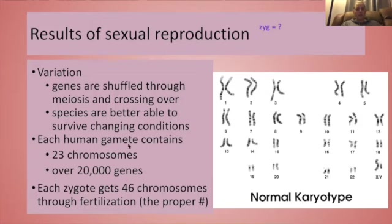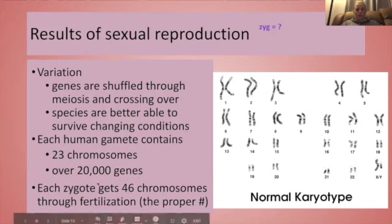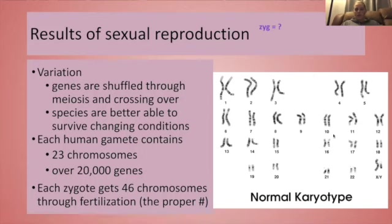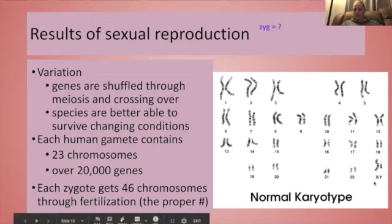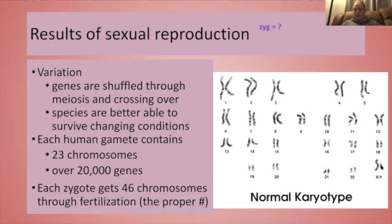Each human gamete contains 23 chromosomes, one set of DNA, and there are over 20,000 genes contained in those 23 chromosomes. Those 23 chromosomes are going to be combined during fertilization to give us 46 chromosomes in our zygote. Here we see another karyotype, a map of our chromosomes, arranged in 23 pairs by size. This last pair will tell us if we have a male or a female: two X chromosomes would be a female, and an X and a Y chromosome would be a male. You will never have a YY because you do have to have a certain amount of protein carried on at least one of these X chromosomes.